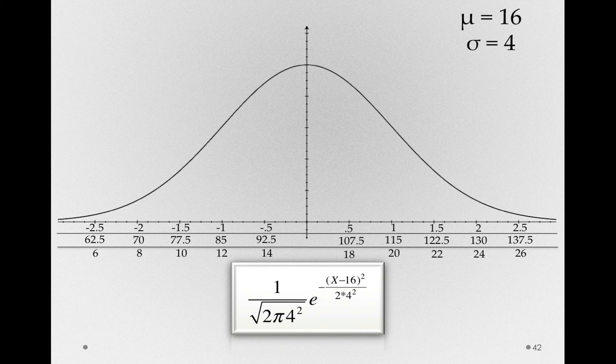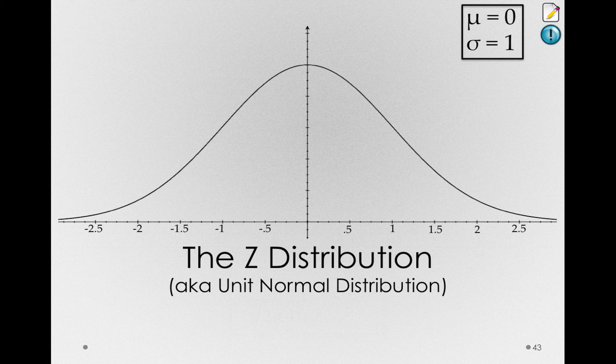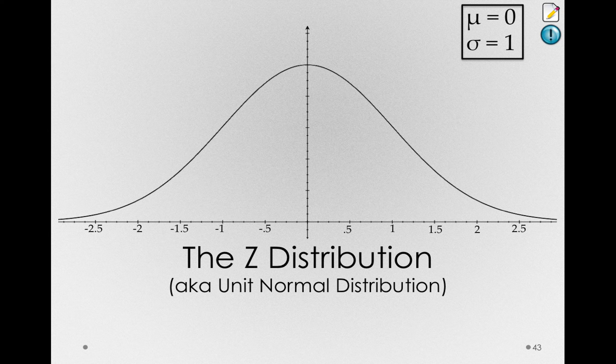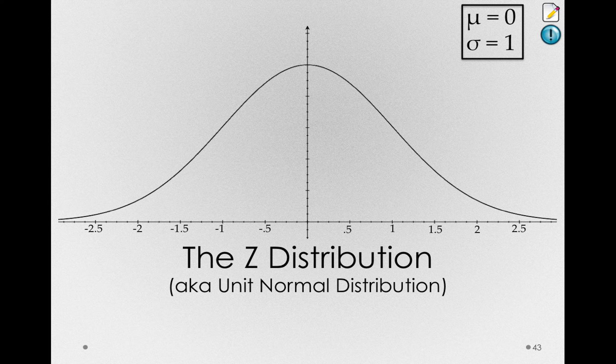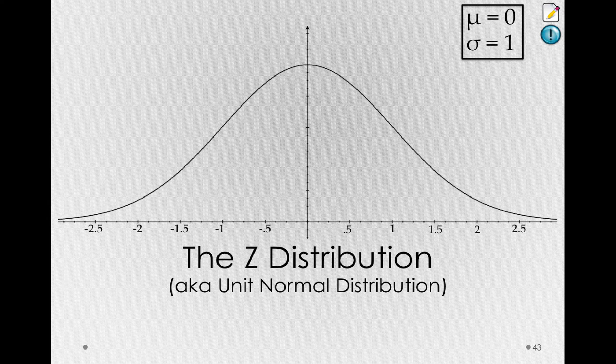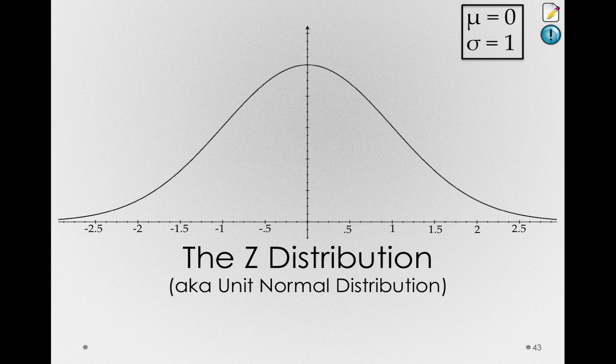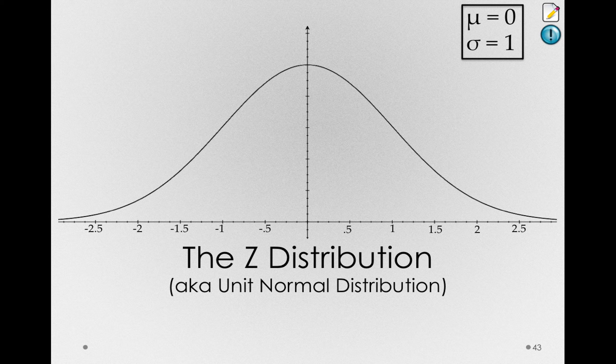Now let's go back to that first distribution, the one that had a mean of 0 and a standard deviation of 1, because this is a rather important distribution in statistics and one we'll talk about at length. This is known as the z-distribution, which is just a normal distribution with a mean of 0 and a standard deviation of 1.